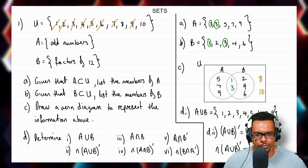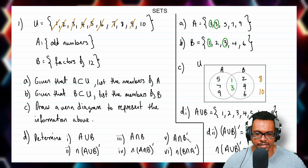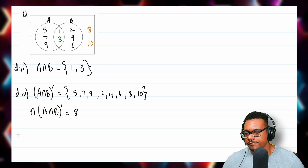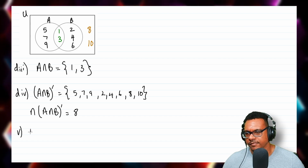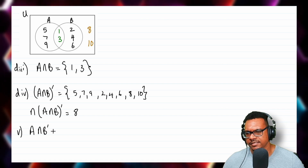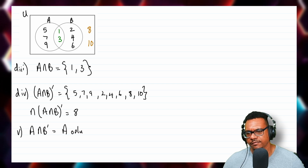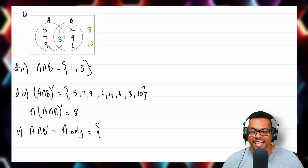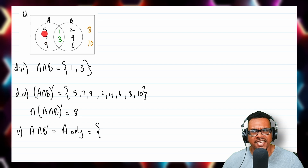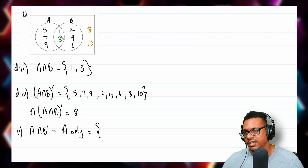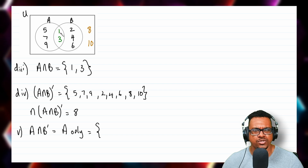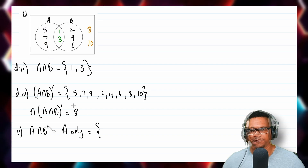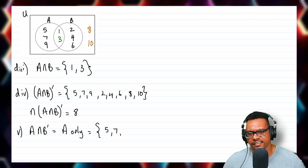For D part 5, we want A intersect B complement, which is A only — the elements in A that are not members of set B. Although 1 and 3 are members of set A, they are also members of set B, so A only gives us {5, 7, 9}.